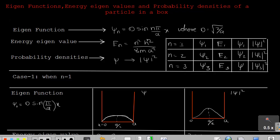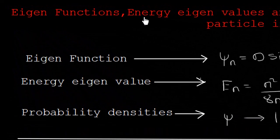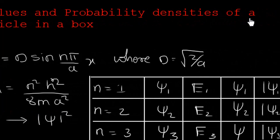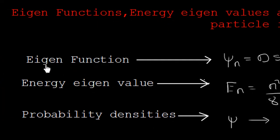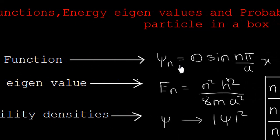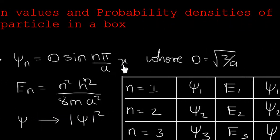Hello everyone, I hope you are all doing very well. Today in this video we are going to see the eigenfunction, energy eigenvalues, and probability densities for a particle in a box. We are given the equation for the eigenfunction: ψₙ = D sin(nπ/a · x), where D equals √(2/a), which we already calculated in a previous derivation. If you don't know how we got this, please go to that video by clicking the 'i' button — it covers the particle in a box, or particle in an infinite potential well.